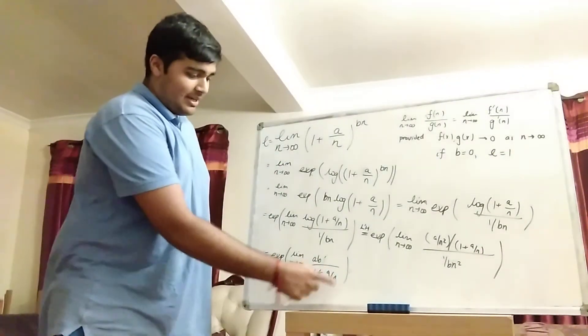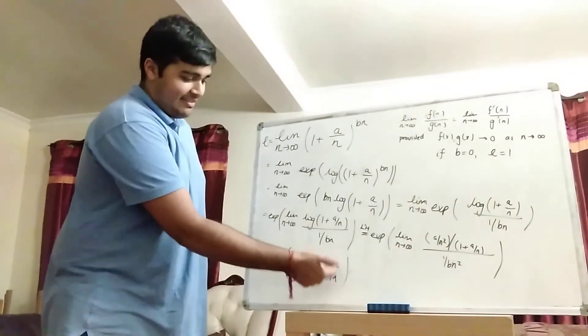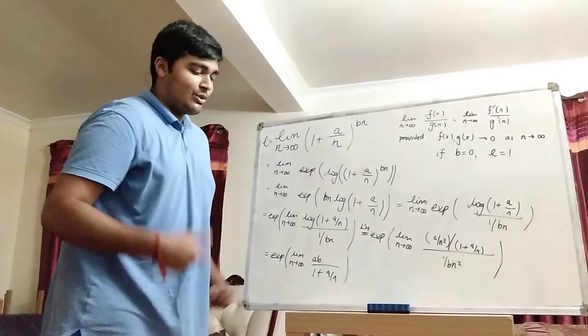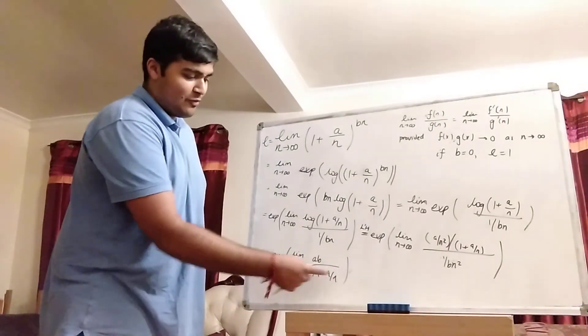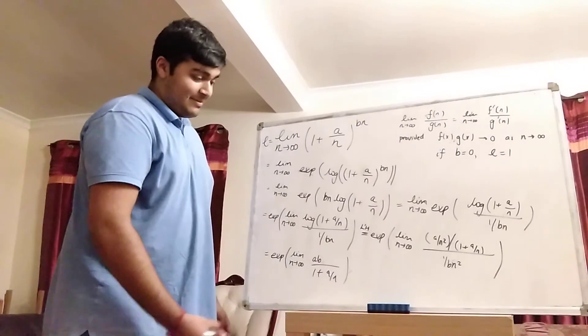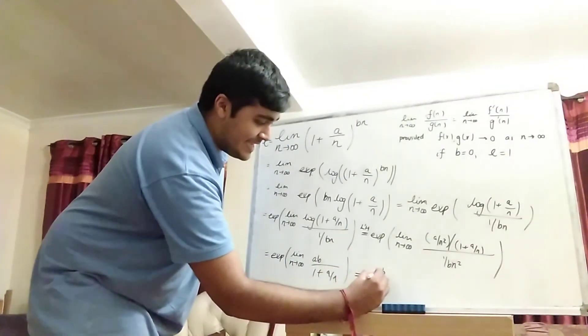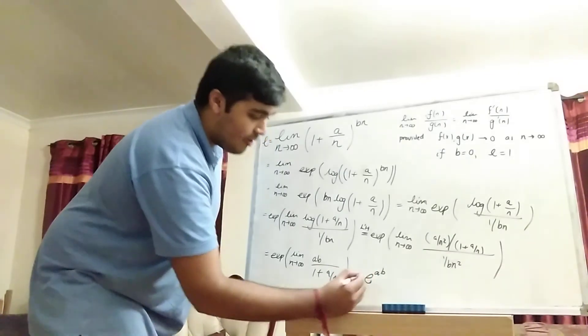And now this is a straightforward limit to compute. The only thing here that is dependent on n is this thing here, a over n. And as n goes to infinity, a over n goes to zero. And thus we've got ab over 1 plus zero, which is just ab. So we've got the exponential of ab, which in other words is e to the power of ab.